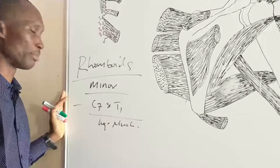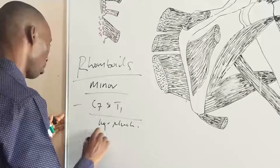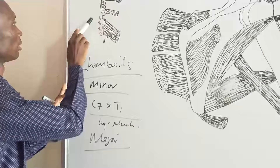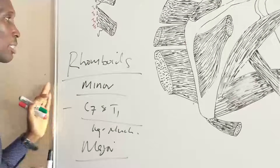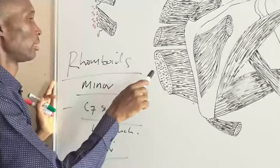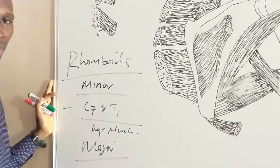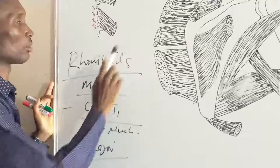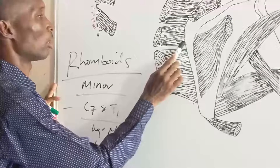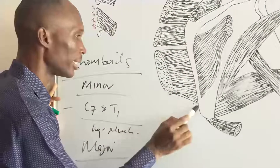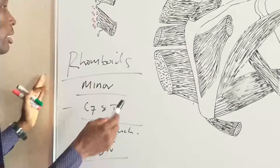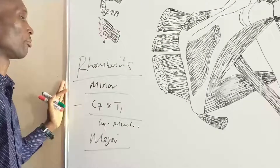For rhomboids major, it also takes origin from the neck region — specifically from the spines of the second thoracic vertebra to the fifth thoracic vertebra, that is four vertebrae. It also runs diagonally downwards towards the posterior aspect of the medial border of the scapula. Rhomboids major is about twice the size of rhomboids minor, and its insertion spans from the lower aspect of the root of the spine to the inferior angle of the scapula.